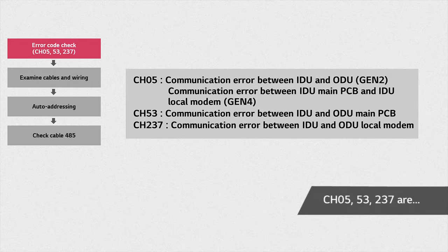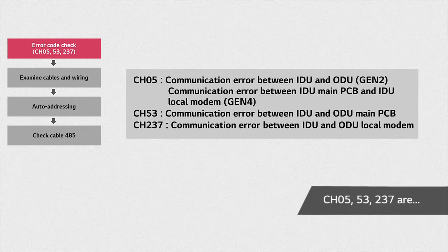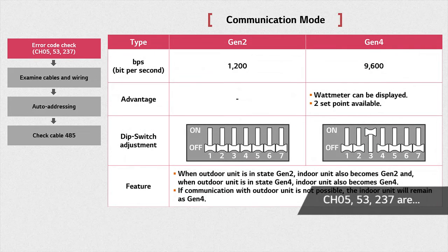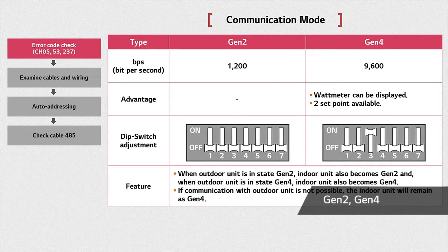Before we describe these three errors, we will explain about communication modes. There are two communication modes in the Multi V5: Gen2 and Gen4. While Gen2 works at 1,200 BPS, Gen4 works at 9,600 BPS.